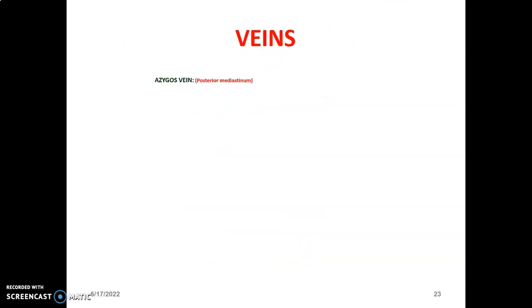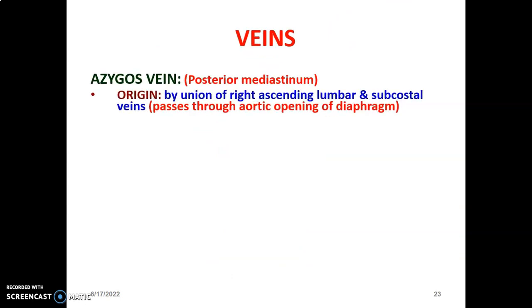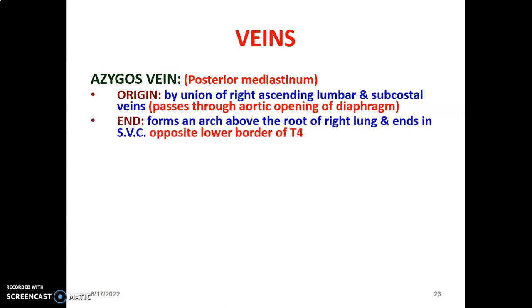The azygos vein is in the posterior mediastinum. Its origin is by the union of the right ascending lumbar and subcostal veins. It usually passes through the aortic opening of the diaphragm. The azygos vein terminates as an arc above the root of the right lung, ending at the superior vena cava at the sternal angle of Louis at the T4-T5 junction — the plane that divides the superior and inferior mediastinum.